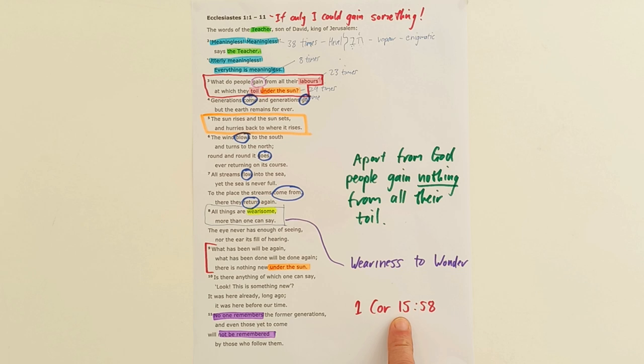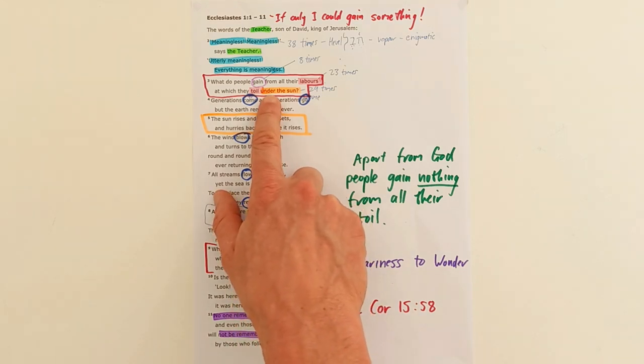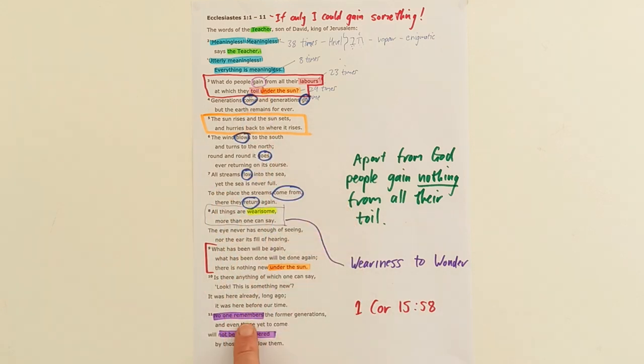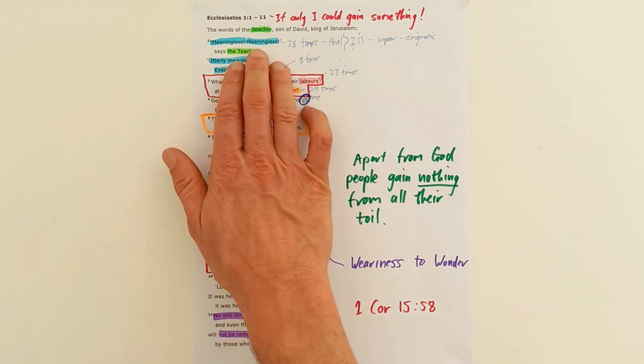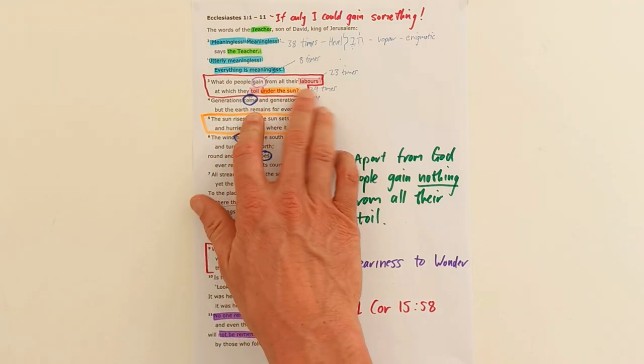This opening passage of Ecclesiastes speaks so strongly into our materialistic driven world that wants to just get and get and get, the chasing the American dream. He says actually chasing the American dream, toiling under the sun for that, in the end you gain nothing and nobody will remember you when you're gone. This passage really challenges that foundation that our world operates on and says to us as Christians, you need to operate on a whole different foundation. You need to operate on the foundation of Christ.